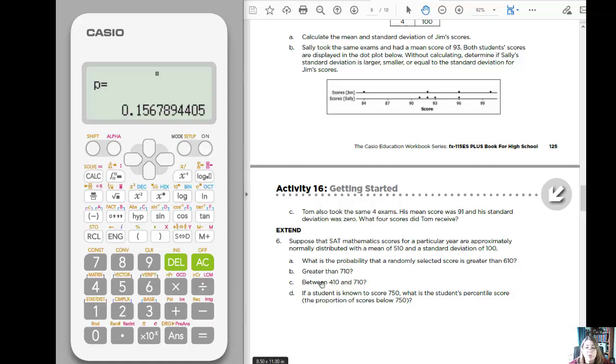So then if you had, for example, C between 410 and 710, we could go back to that. So let's go to mode, do it again, and choose number two. So now our lower this time is 410. And our upper is 710. Our standard deviation is still 100. And our mean is still 510. And so notice we have a much higher probability of scoring between 410 and 710.